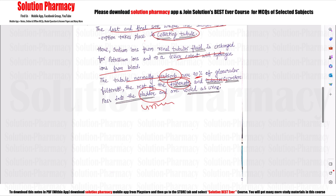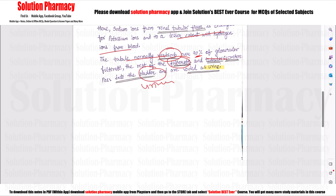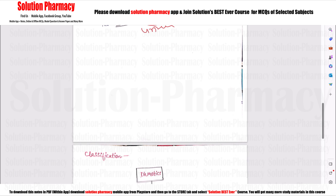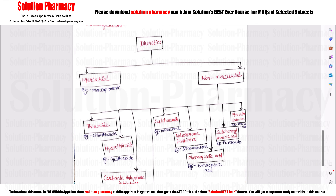This was the introductory part. Now we learn the classification. In the classification of diuretic drugs, there are two major categories: the first is Mercurial, and the second is Non-Mercurial.